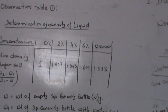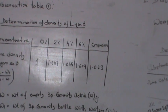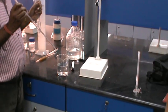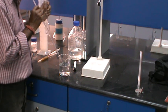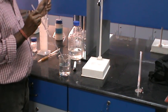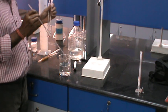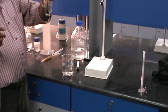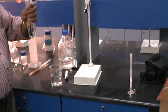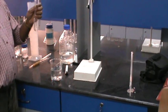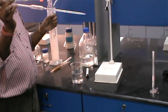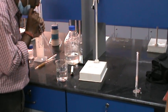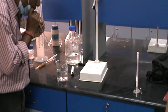We will first show you the experiment with water using the Oswald viscometer, then repeat it for the other glucose solutions. On the left-hand side is the Oswald viscometer, and on the right-hand side is a graduated pipette. We will use the pipette to take water from the beaker and put it into the Oswald viscometer.